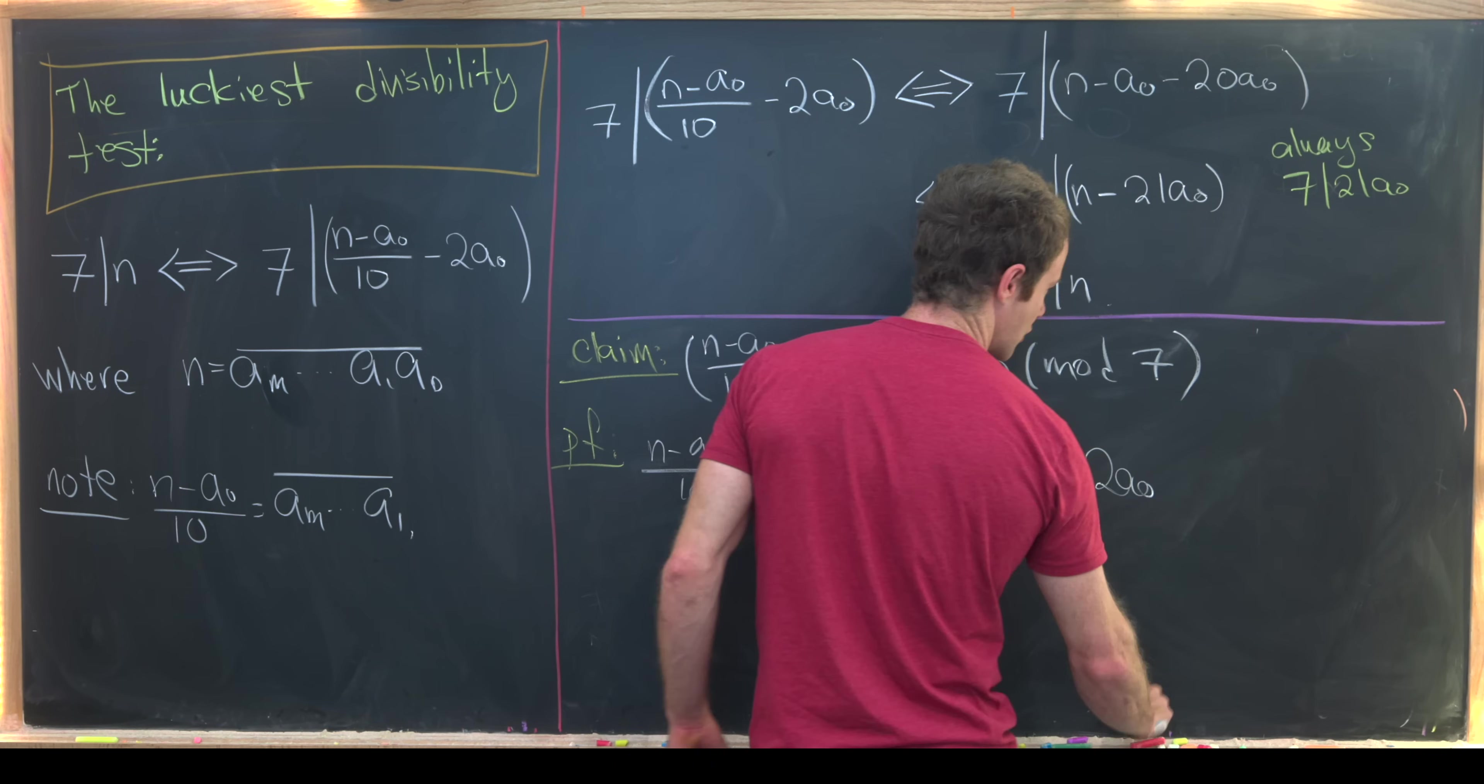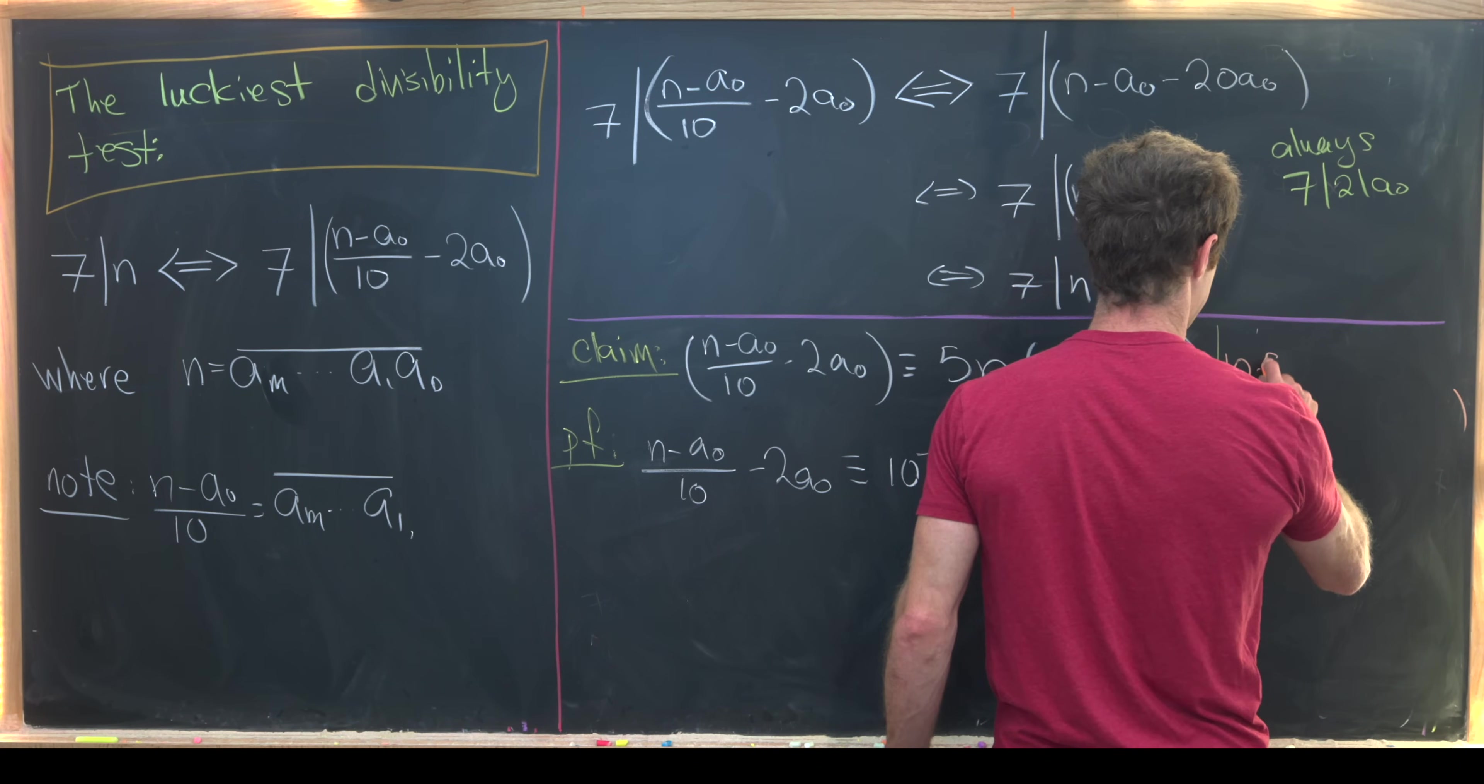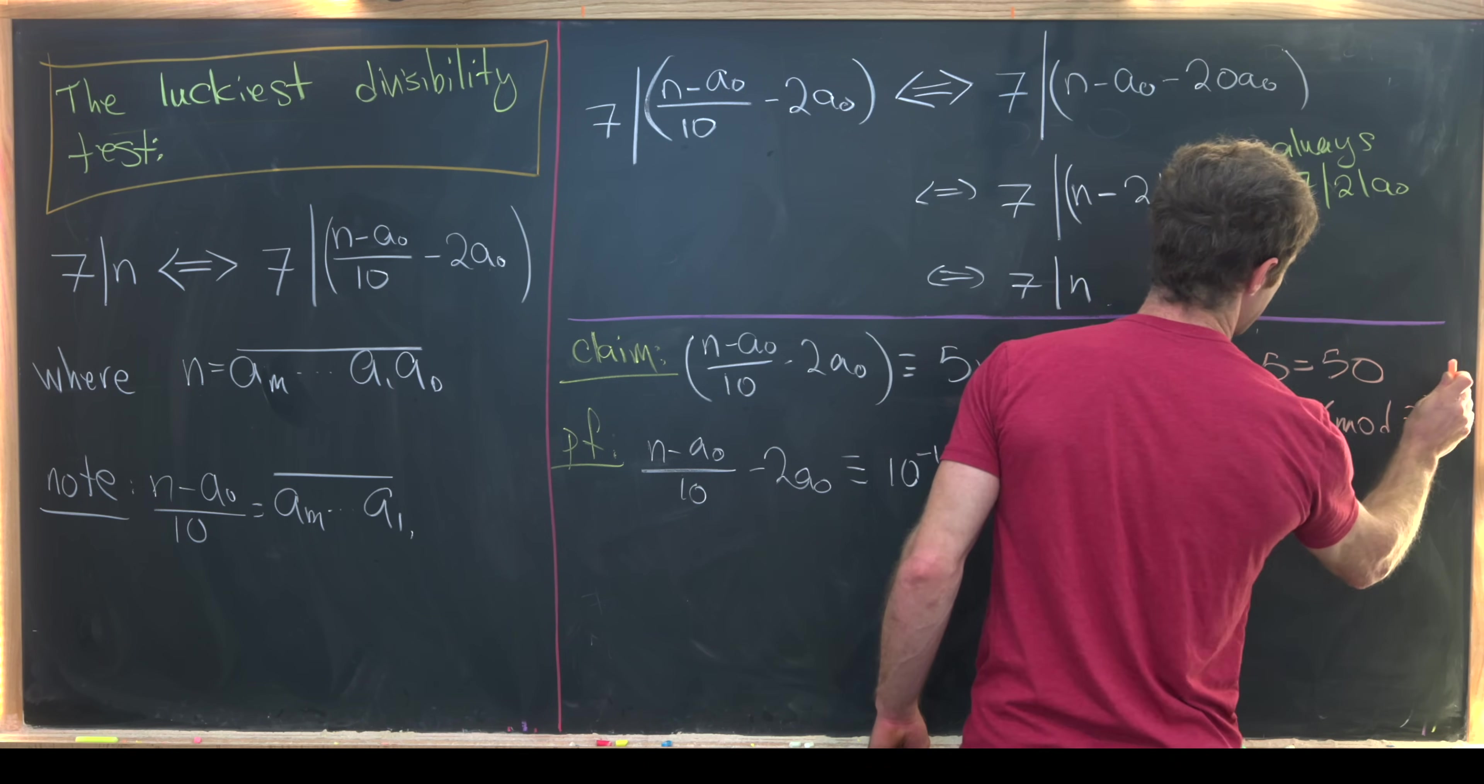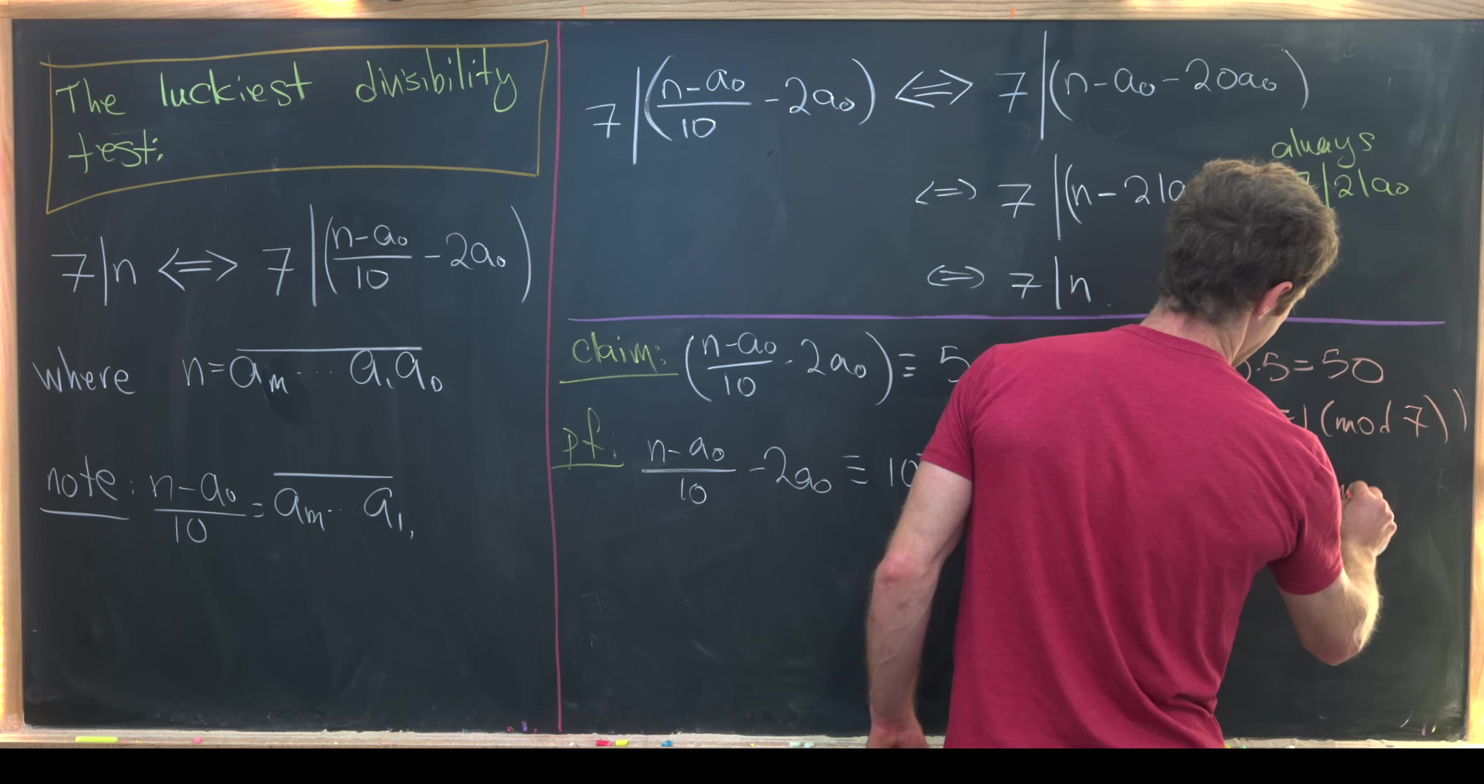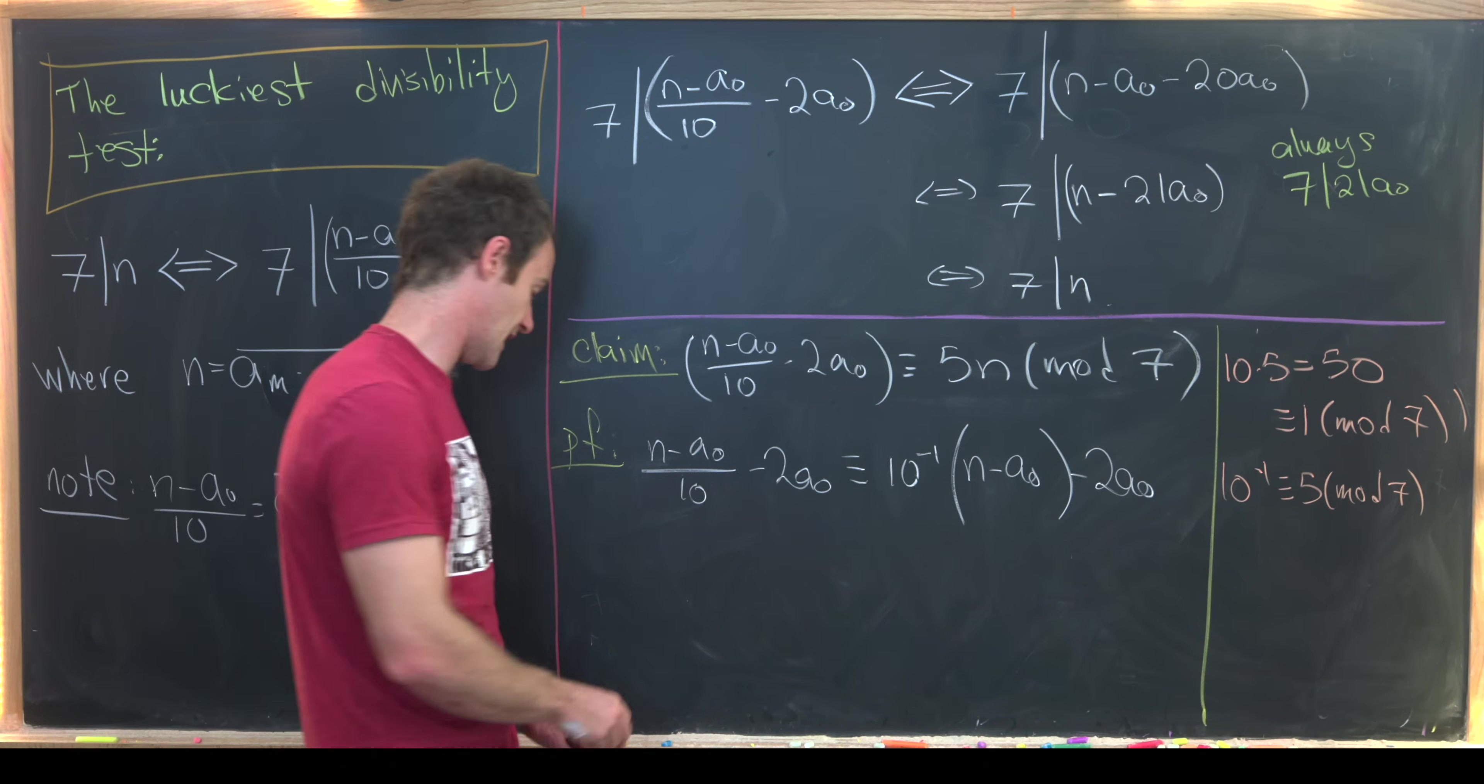And now we'll go over here and make a little bit of a side calculation. Well, let's notice that 10 times 5 is equal to 50, which is congruent to 1 mod 7. Because it's one more than a multiple of 7, it's one more than 49. So that means that 10 inverse is congruent to 5 mod 7. And we have the modular inverse of 10 mod 7. And that is 5.